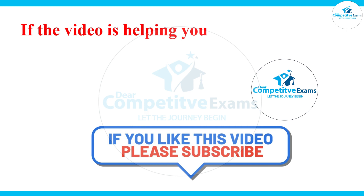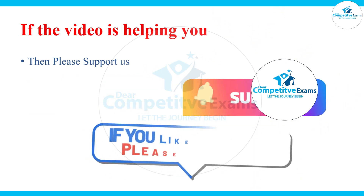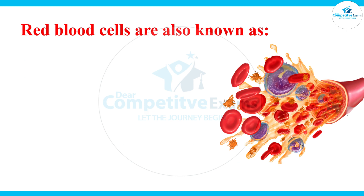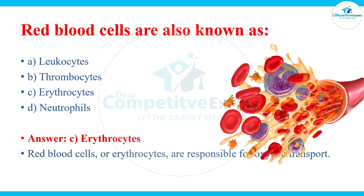Red blood cells are also known as what? What is the other name for red blood cells? The answers are leukocytes, thrombocytes, and erythrocytes. The correct answer is erythrocytes. Red blood cells, or erythrocytes, are responsible for oxygen transport, as we have seen in the previous question.